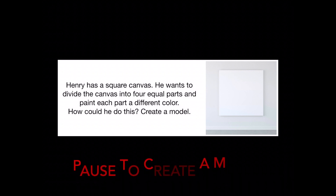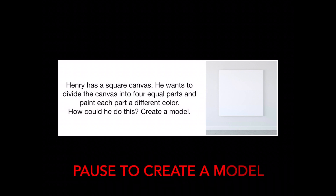Now first off we have this problem. Henry has a square canvas. He wants to divide the canvas into four equal parts and paint each part a different color. How could he do this? You can pause the video to create your own model.